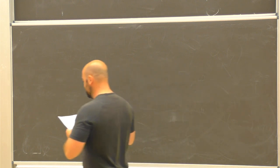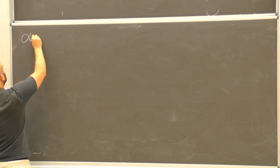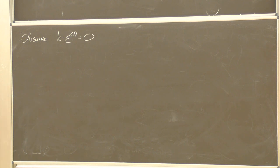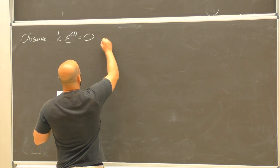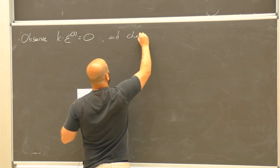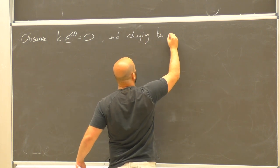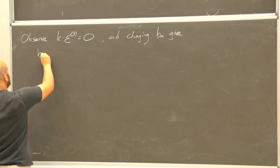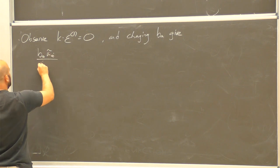Observe, first of all, that k · epsilon^+ = 0, so we're in Lorentz gauge. Why is that? If I contract this thing with k — that's contracting with kappa_alpha kappa-tilde_{alphadot} — I'm going to contract kappa-tilde with itself by a skew-symmetric inner product, so that's zero. Changing the choice of this constant spinor B_alpha gives a gauge transformation of our initial photon wave function.